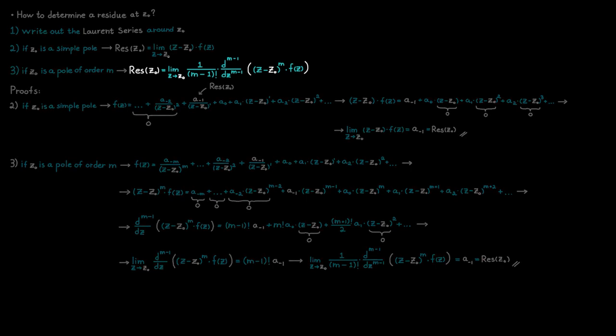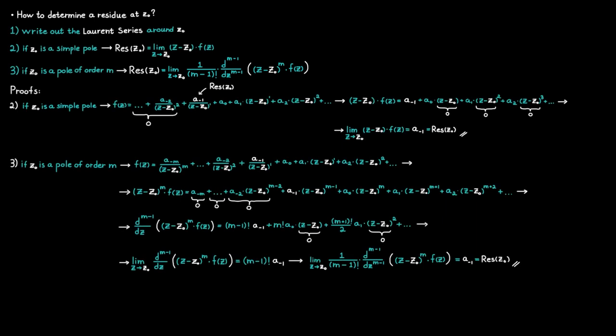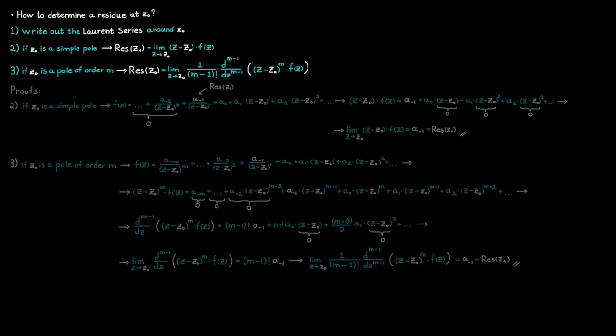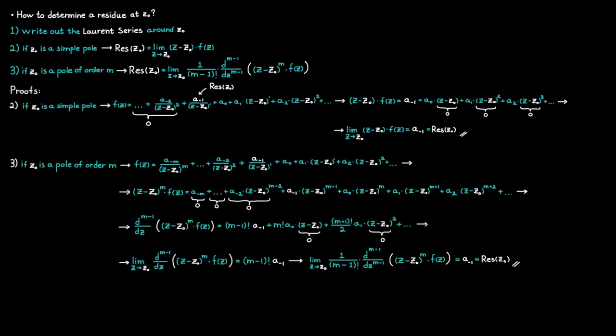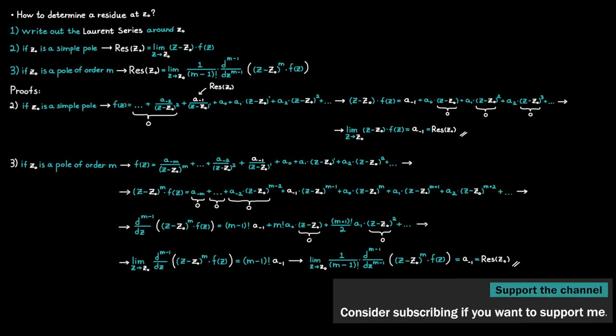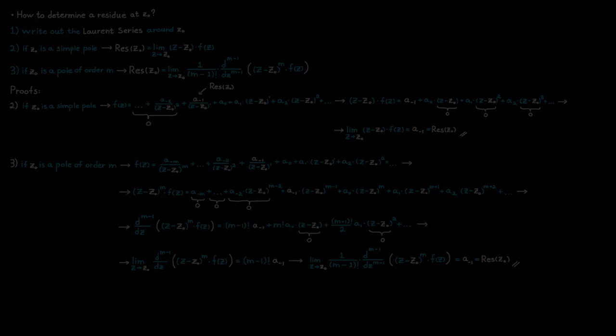By doing all of this, I hope I have been able to show you that all three options use the same principle: write out the Laurent series expansion around the point C0 and then solve for the coefficient a_{-1}. That was everything for this time — consider subscribing if you like what I do here, and thanks for watching.